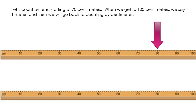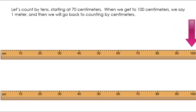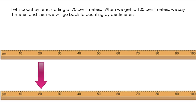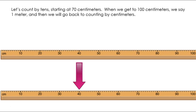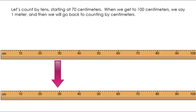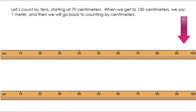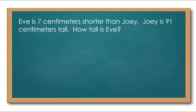We're going to count just like before but starting at 80: 80, 90, one meter, 110, 120, 130, 140. Now let's go backwards: 140, 130, 120, 110, one meter, 90, 80. Good job — give yourself a kiss on the brain!